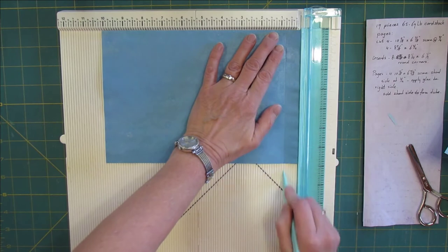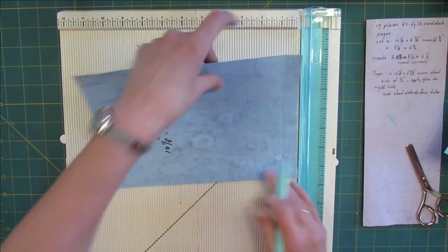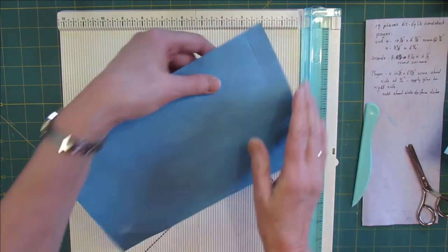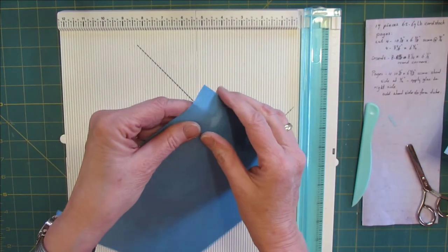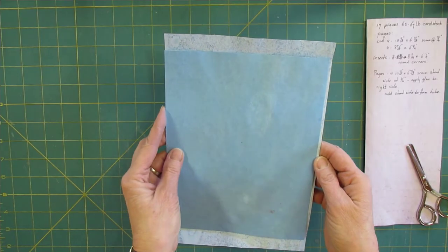Do the other short side, score at 3/4 and 3/4. It makes it so much easier to fold this part over. As you can see, one is a little bit shorter than the other one.